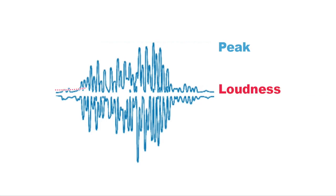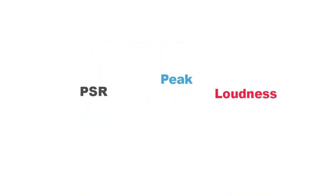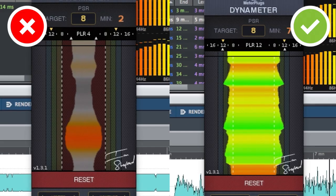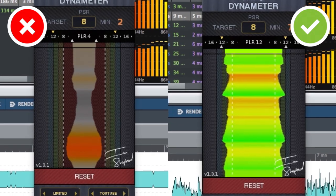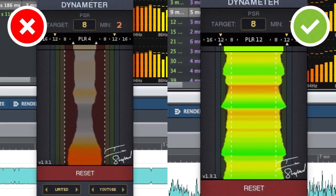Dynameter measures the difference between the peak and the short-term loudness of your audio — PSR for short. Checking that the PSR of your music doesn't fall too low is a very reliable way of making sure it's got great dynamics.